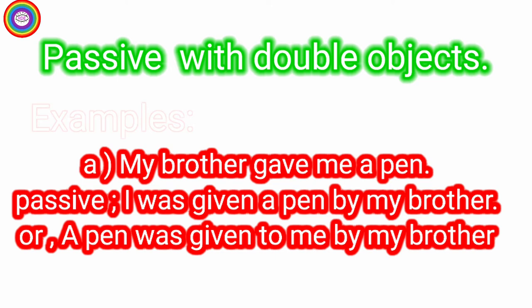Today we are going to learn passive with double objects. Look at the example: my brother gave me a pen. Me and a pen are two objects. Look and analyze how they are changed in two ways. First, using object 1 as the subject, or using object 2 as the subject. You can pause this video for a while for your analysis.